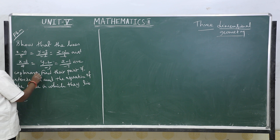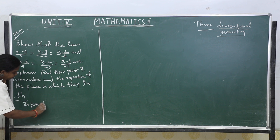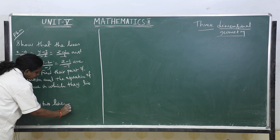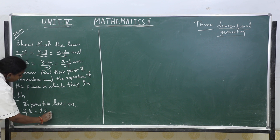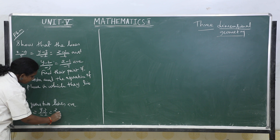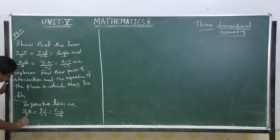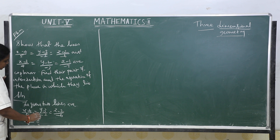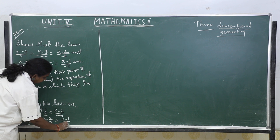First, we will check whether the lines are coplanar or not — we have to prove that. The given two lines are (x−4)/5 = (y−3)/(−2) = (z−2)/(−6) and (x−3)/4 = (y−2)/(−3) = (z−1)/(−7).